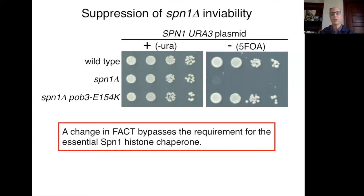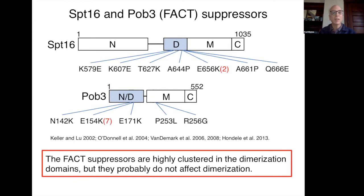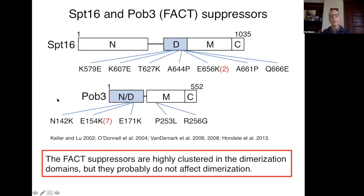How might that occur? We had isolated a large number of mutations in Spt16 and Pob3, the two components of FACT. Looking at the domain structures of Spt16 and Pob3, the suppressor mutations are highly clustered. All of the Spt16 mutants cluster in the Spt16 dimerization domain; most of the Pob3 mutations, including our favorite found seven independent times, cluster in the Pob3 N-terminal dimerization domain. We thought these probably did not affect dimerization.